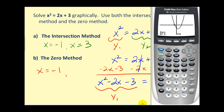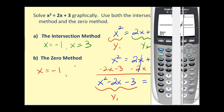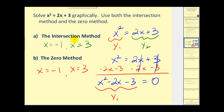Now find the other x-intercept. Press second, trace, option two. The left bound will be below this x-intercept — press enter. The right bound will be above — press enter twice. We can see it's x equals three. Regardless of which method we use, the solutions are the same: x equals negative one and x equals three.